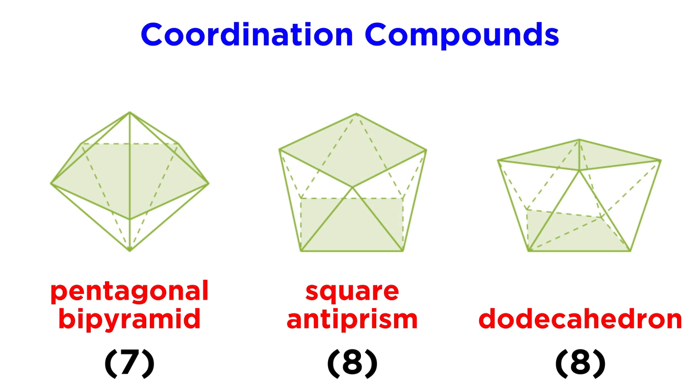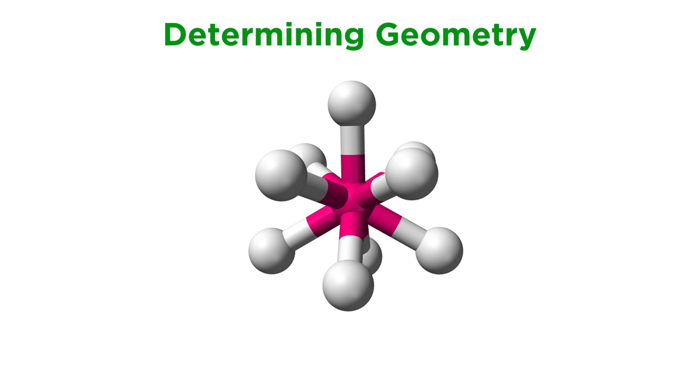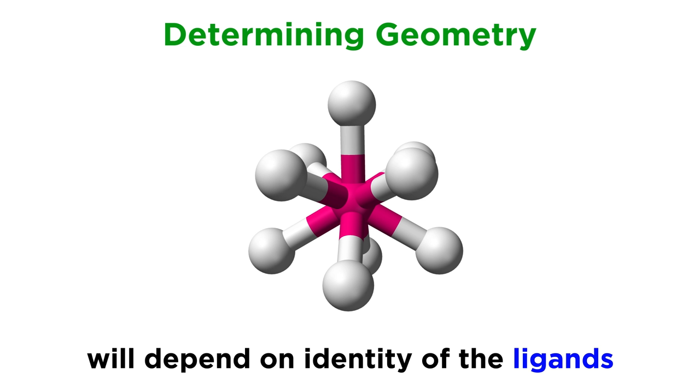Many of these do not follow the geometries expected from the VSEPR model, due to details regarding nonbonding D electrons. As we mentioned, a few coordination numbers offer more than one option for geometry, and the geometry adopted by the complex will depend on the precise set of ligands involved.